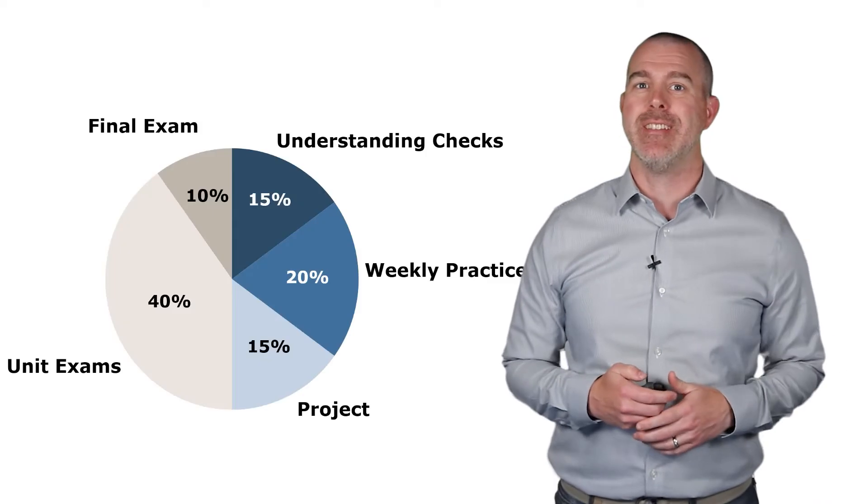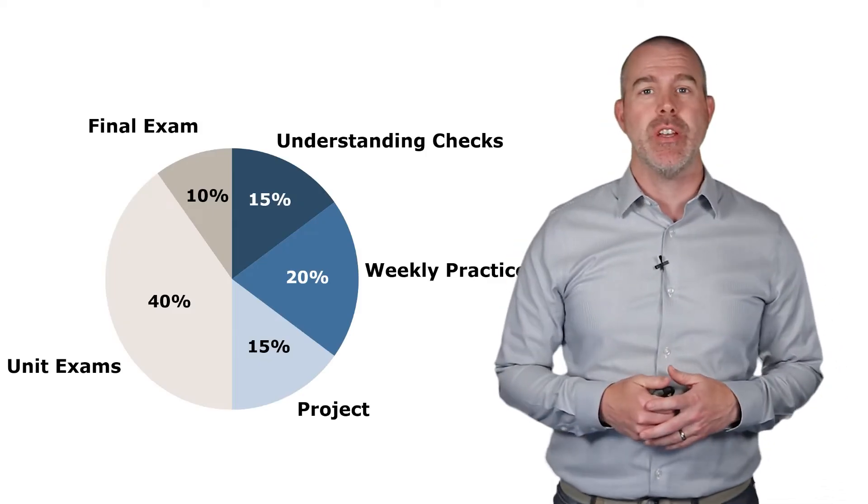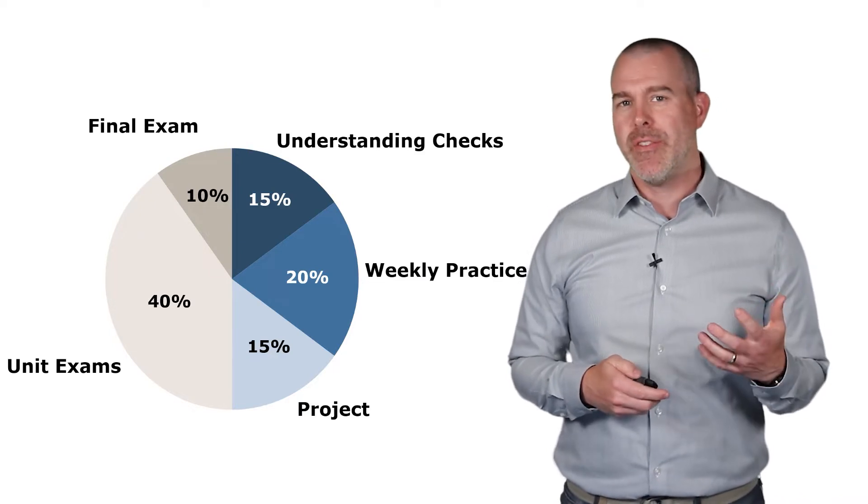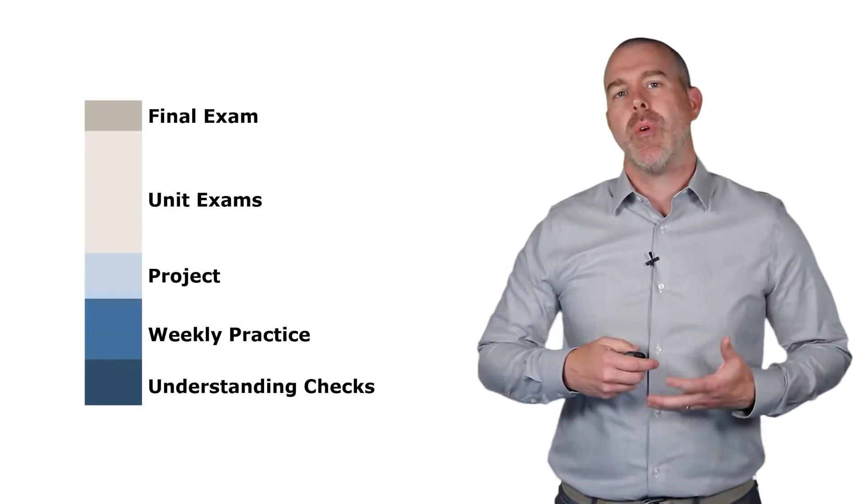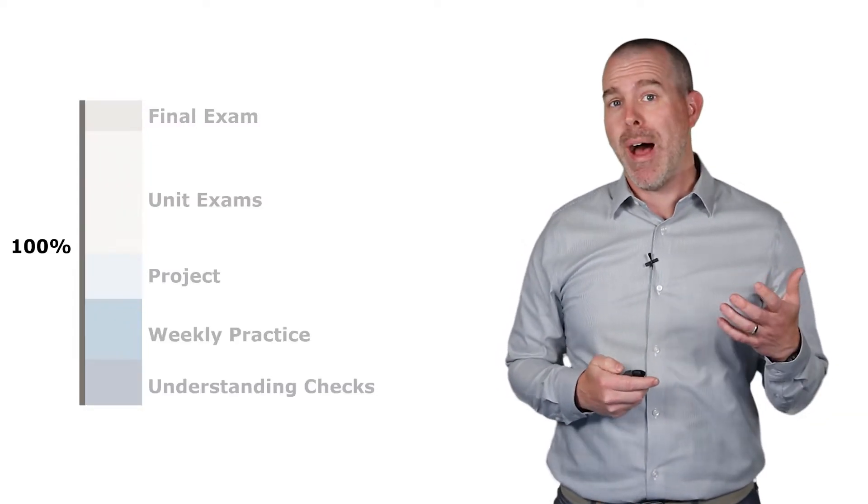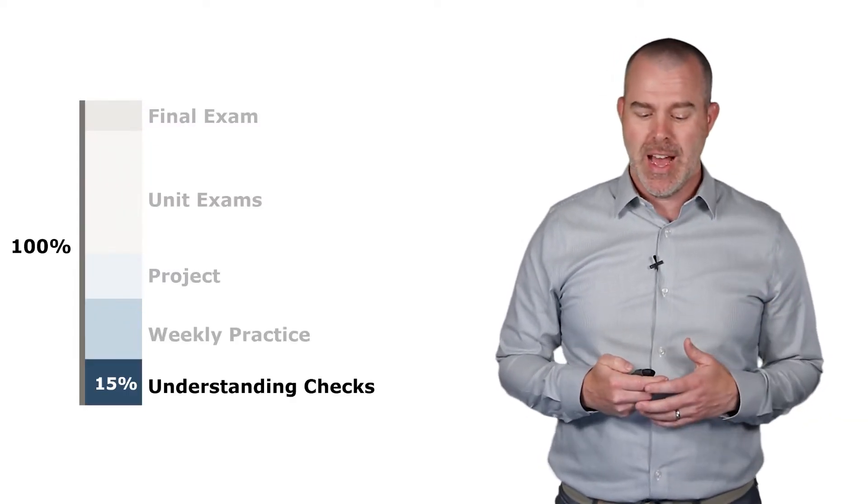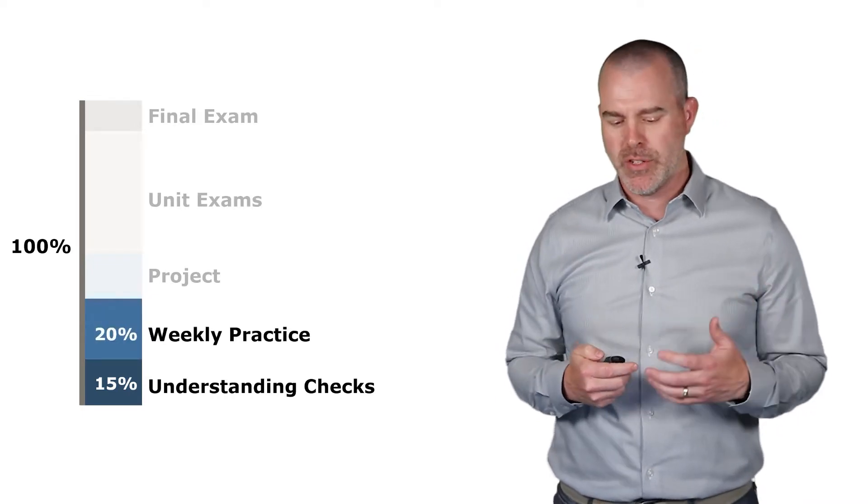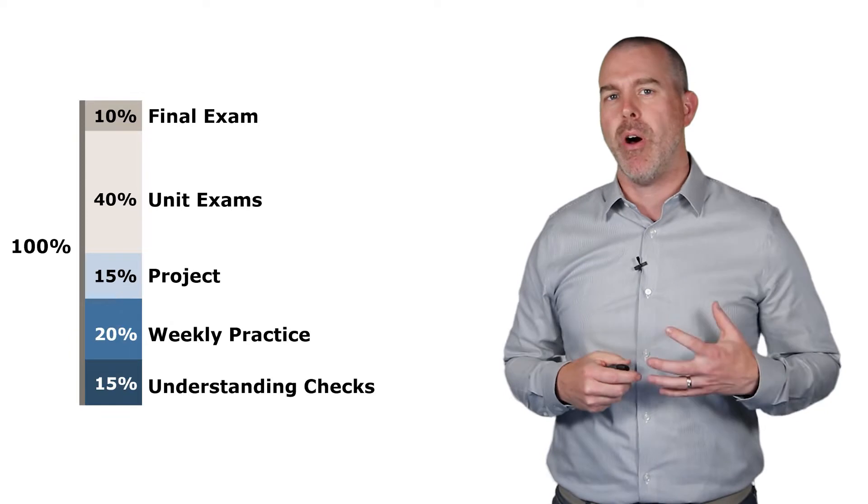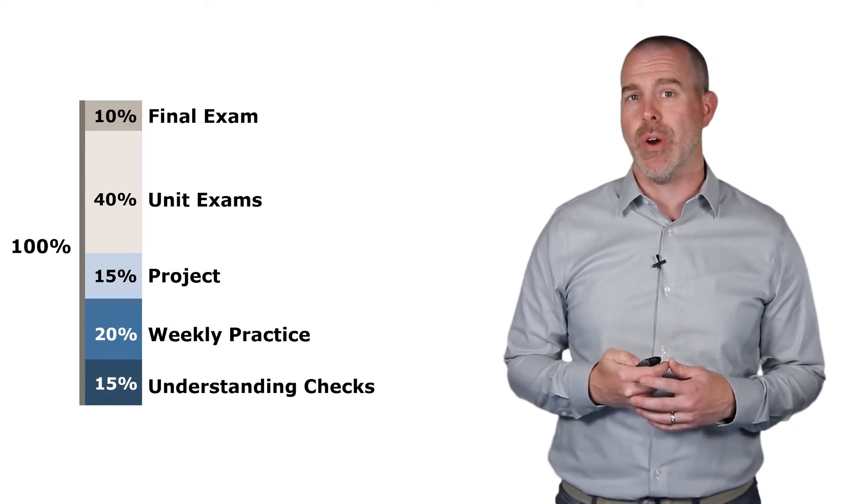We're going to start by talking about something called the weighted mean. I actually use this in my class to calculate my grades, so I'm going to use that as an example. This is the distribution that I use for my statistics classes, where I have these different categories. If we look at them vertically, your grade gets stacked up and made out of these different components. So the total possible would be 100%: 15% from the understanding checks, 20% weekly practice, etc. Each of those components adds up to give you a total of 100% in the course.